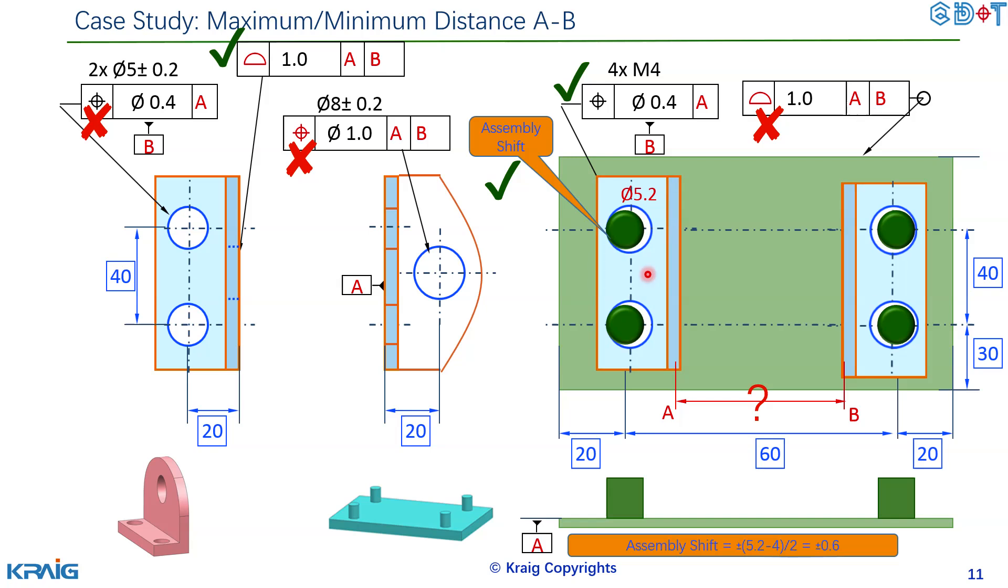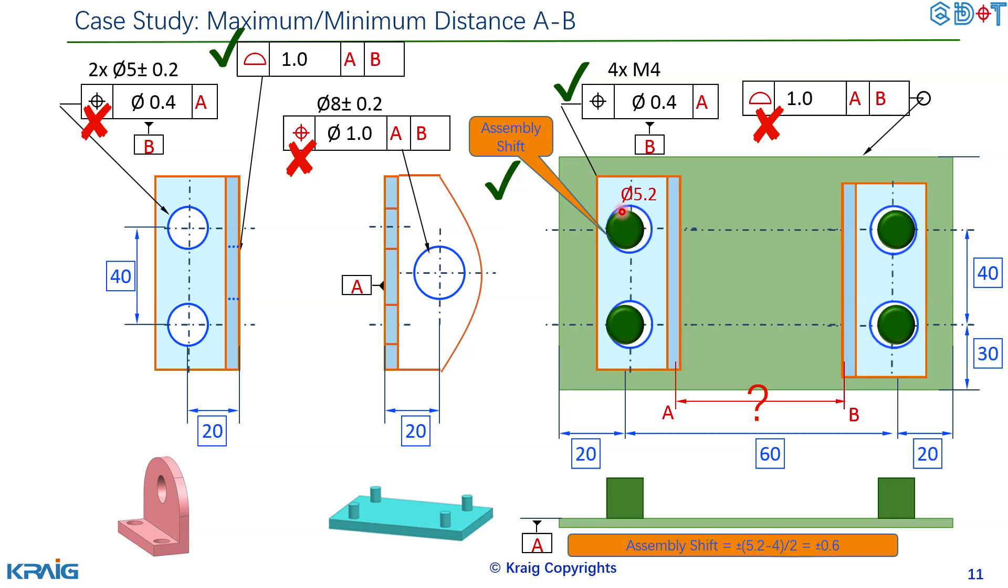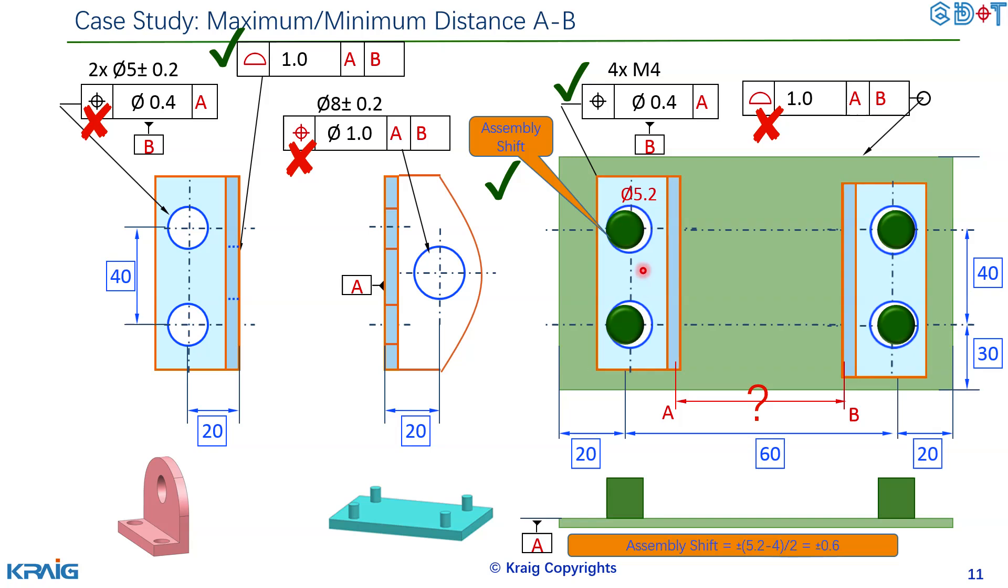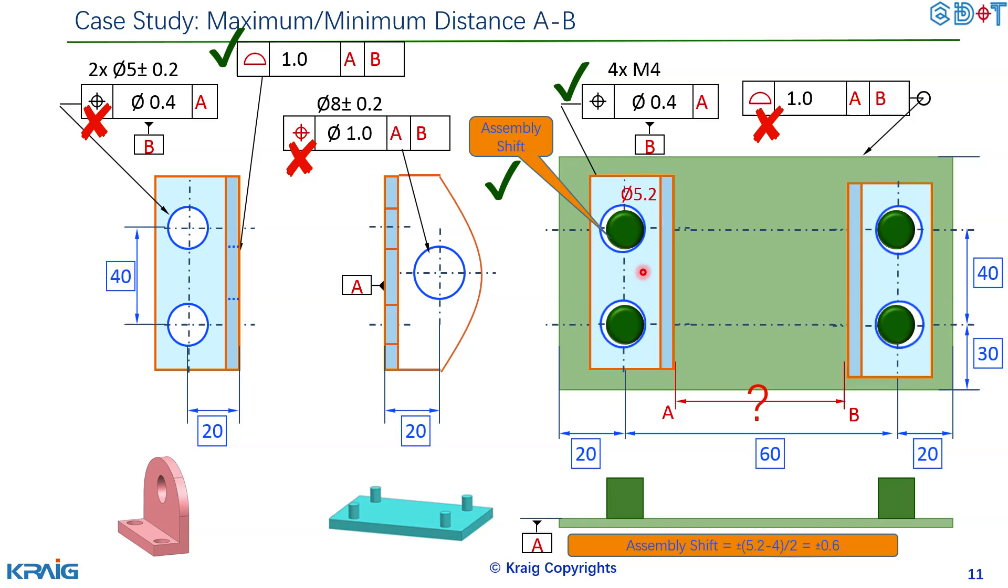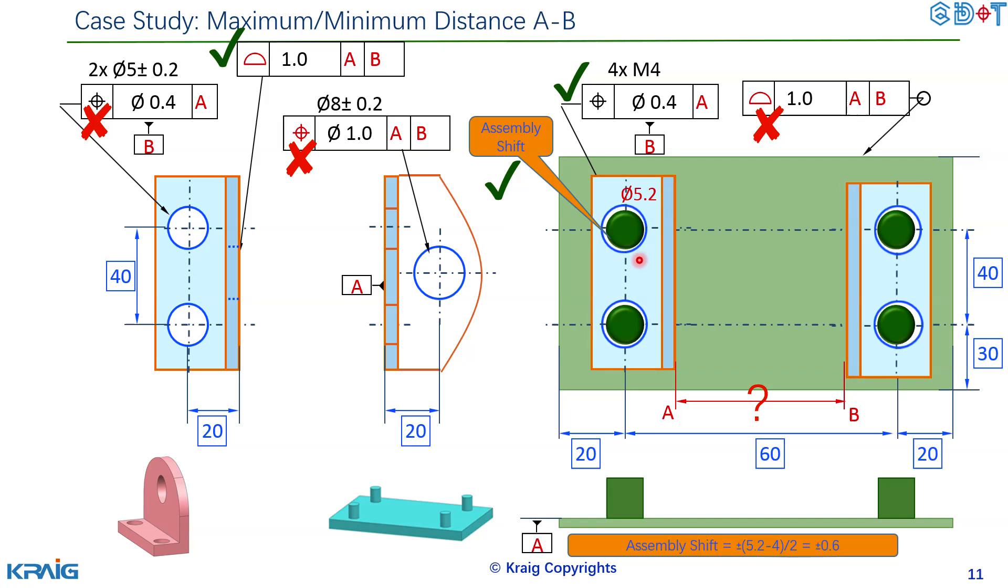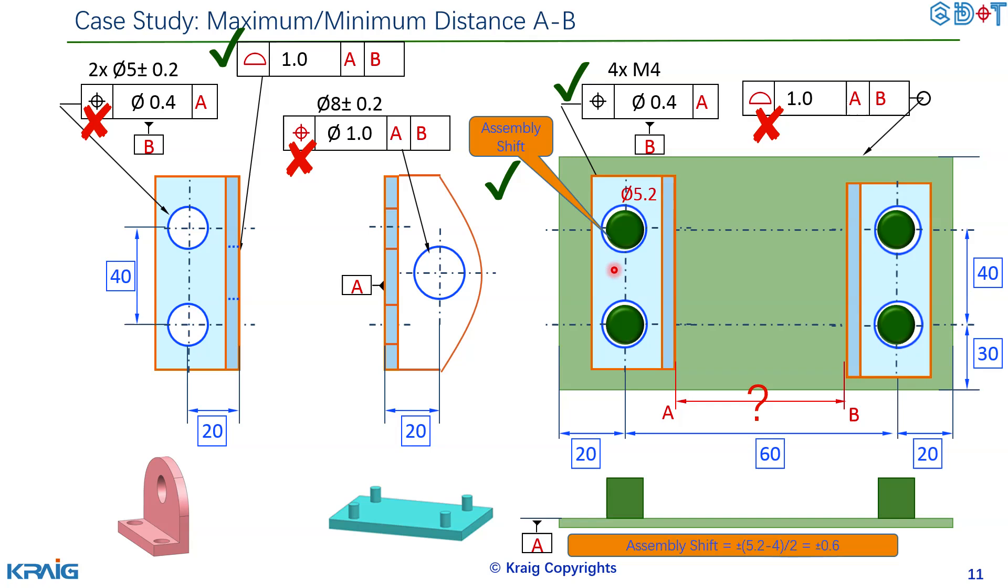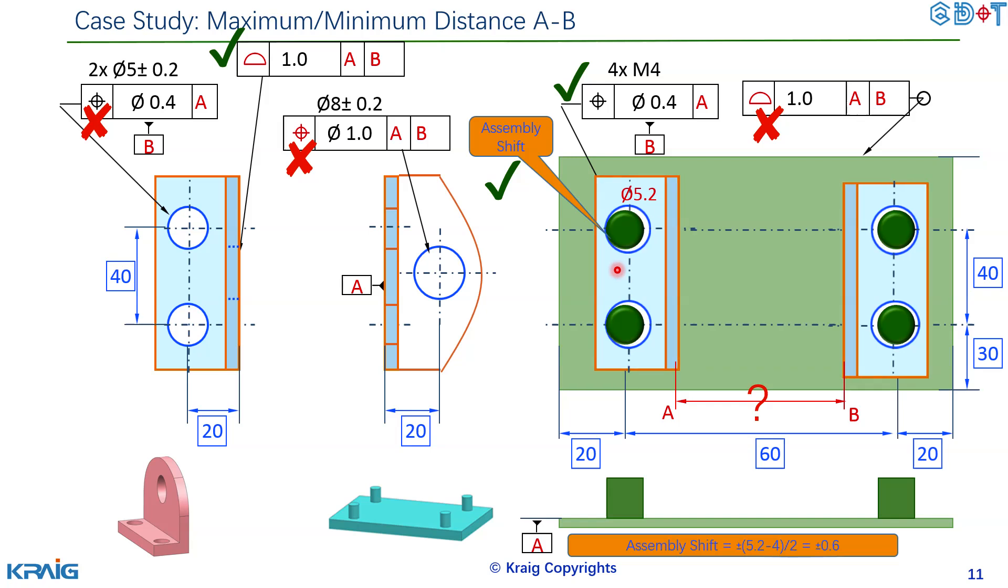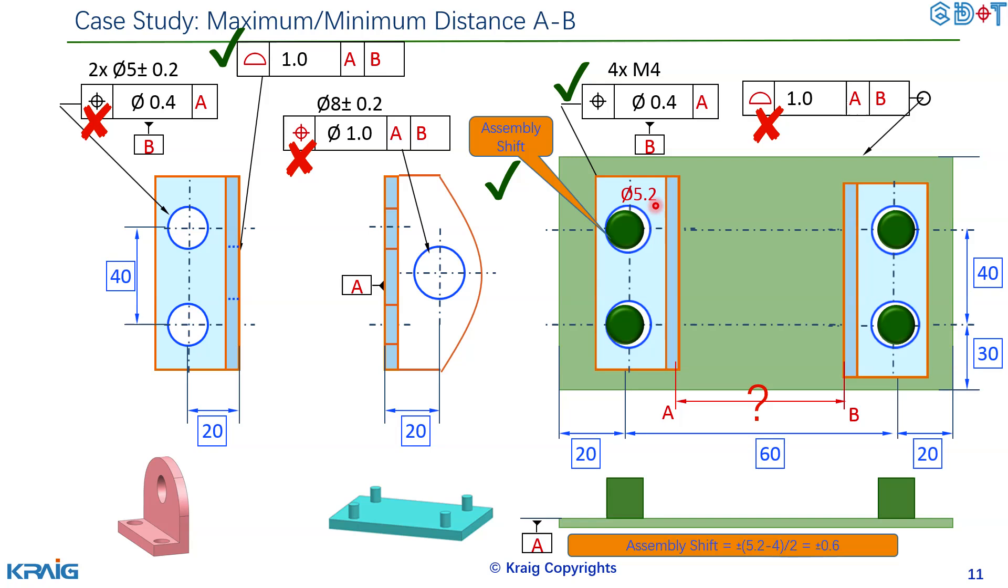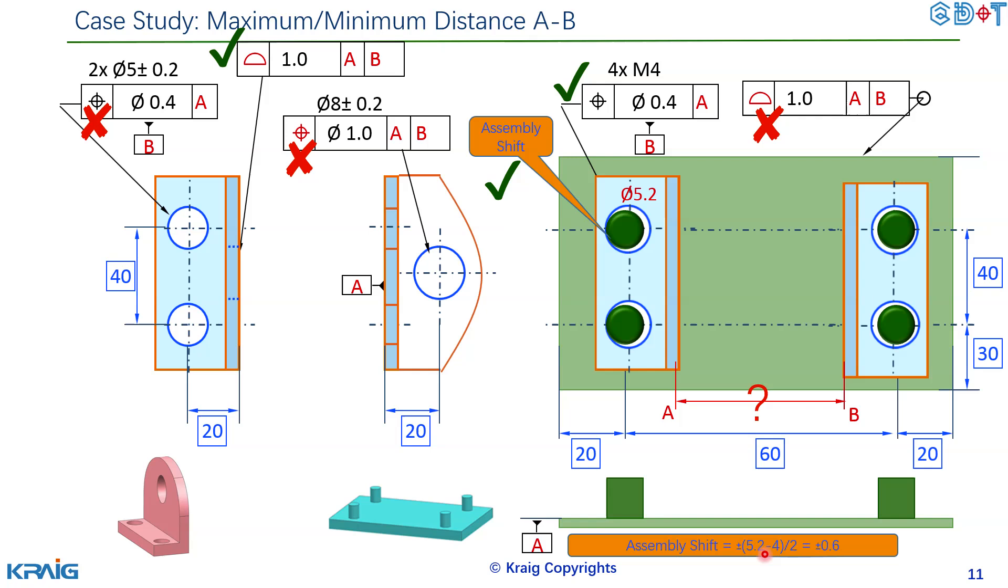Once there's a maximum diameter and there's a gap here then it will allow the assembly shift. And as you will have learned in my previous module, assembly shift means if there's a gap between the hole and pin then there's a possibility that the assembly position will deviate to a different direction. So the maximum assembly shift we're gonna use 5.2 minus 4.